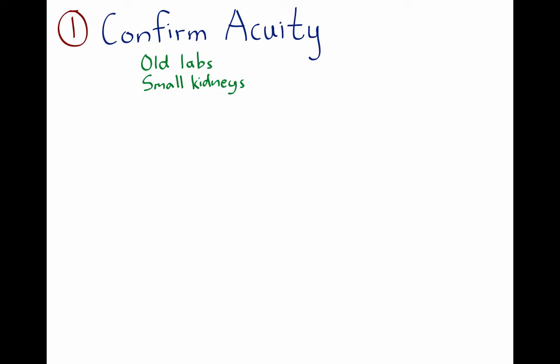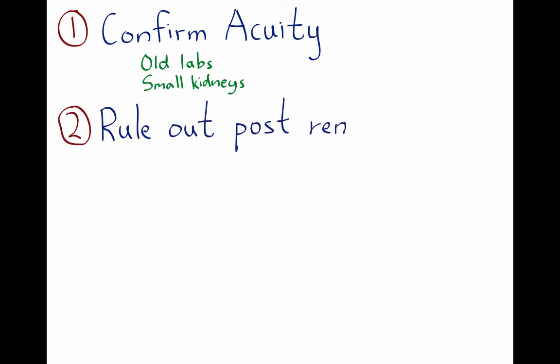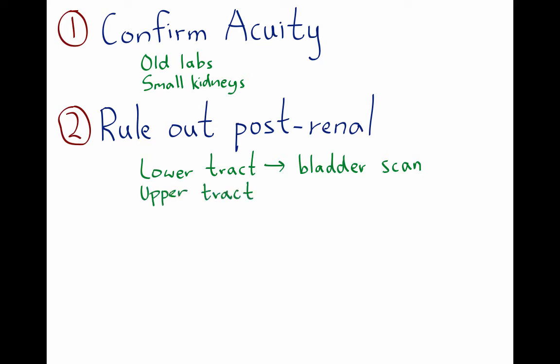Assuming it's acute kidney failure, one needs to rule out post-renal causes. This can be done quickly using a bladder scan. If a patient has a Foley catheter already in place, obstructive uropathy is highly unlikely. The exception is patients with a retroperitoneal process — for example, a lymphoma or metastatic cancer — where all obstruction is upper tract, requiring an abdominal CT to evaluate the retroperitoneum.